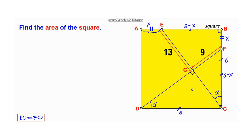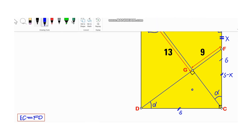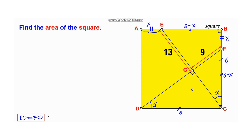Since EC equals FD, we can represent both lengths with a single variable. Let's call this hypotenuse Y. Then for EC, the length GC will be Y minus 13, and for FD, the length GD will be Y minus 9.